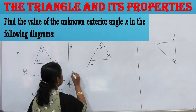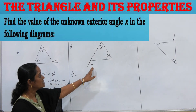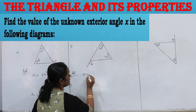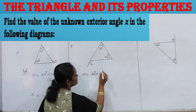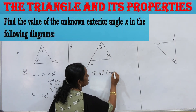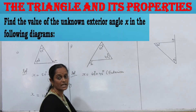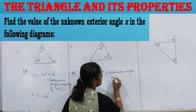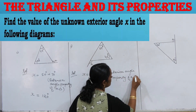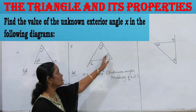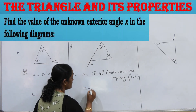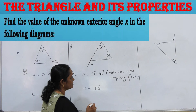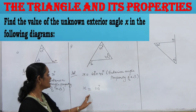In the next diagram, find the exterior angle x. The interior opposite angles are 65 degrees and 45 degrees. By the exterior angle property of a triangle, x equals 65 plus 45, which is 110 degrees.